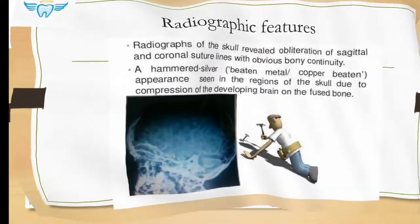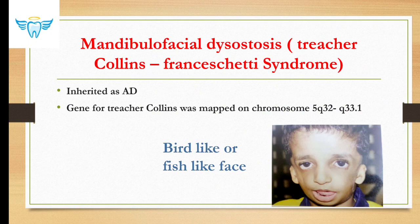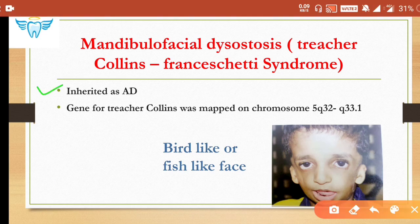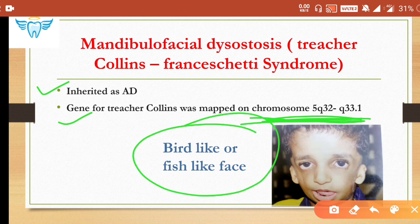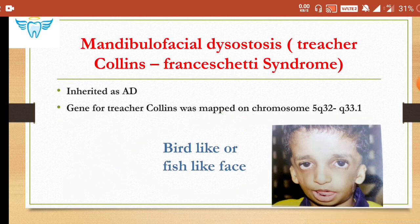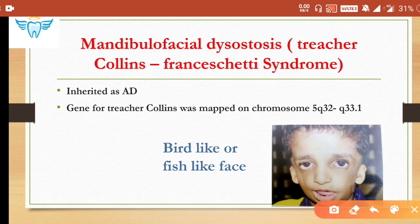The second syndrome is mandibulofacial dysostosis, famously known as Treacher Collins syndrome. It is inherited as autosomal dominant, and the gene for Treacher Collins was mapped on chromosome 5q32 and q33.1 — remember this locus for MCQs. The typical peculiarity of Treacher Collins syndrome is a bird-like or fish-like face. The images used are directly from Shafer's textbook.